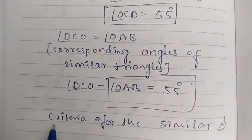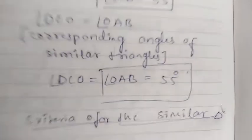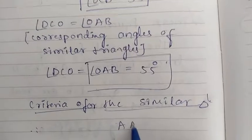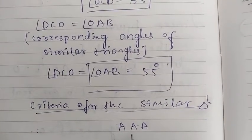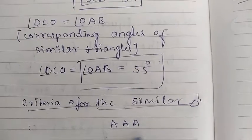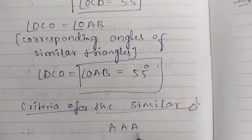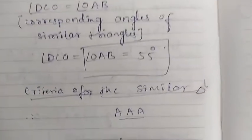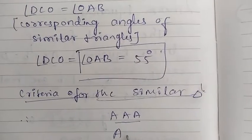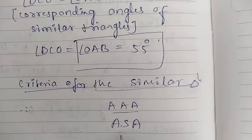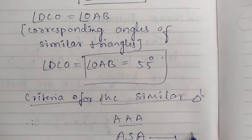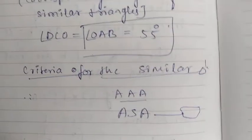Remember the criteria for similarity of triangles. Angle-Angle-Angle (AAA): if two triangles have their corresponding angles equal, then both triangles are similar. Angle-Side-Angle (ASA): if one triangle has two angles and one included side equal to the corresponding parts of another triangle, then both triangles are similar.